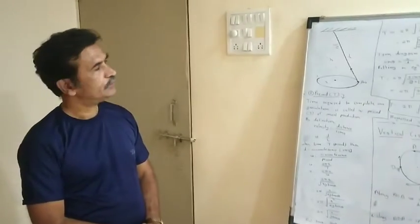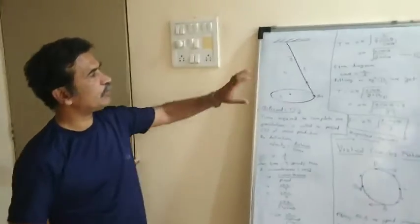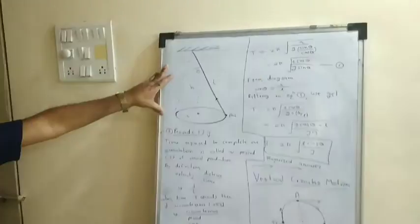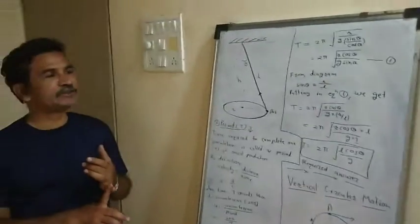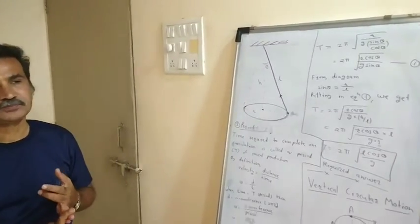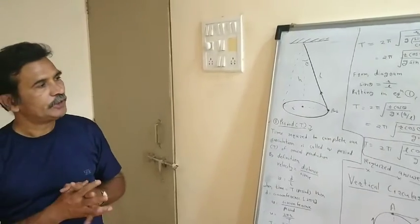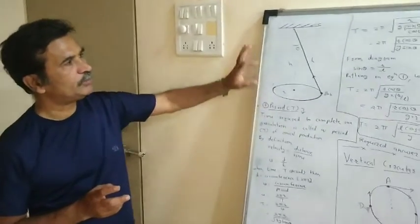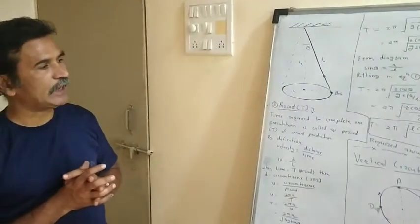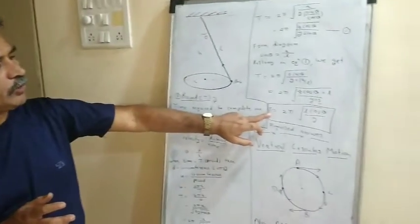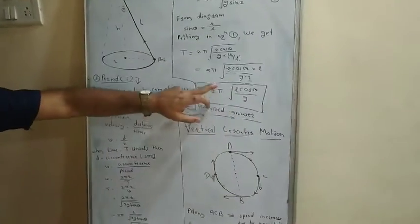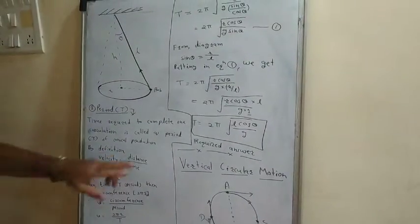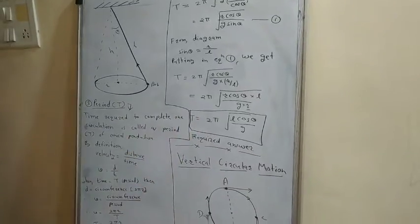We have seen the concept of conical pendulum, and previously we derived the velocity expression and angular velocity expression. In board examinations, questions normally ask to obtain the expression for the period of the conical pendulum. Sometimes the formula is given and modified for multiple choice questions, so we should know the exact formula.